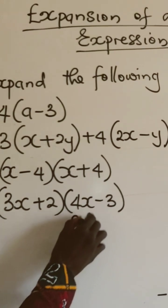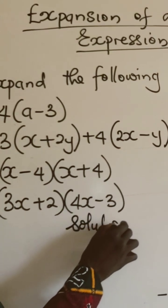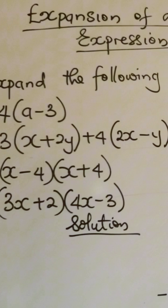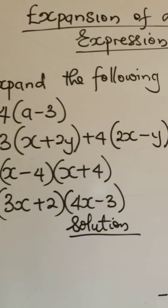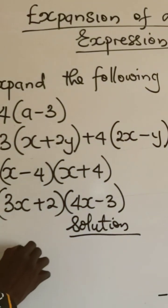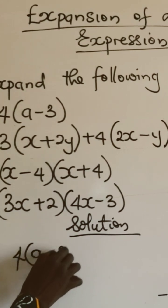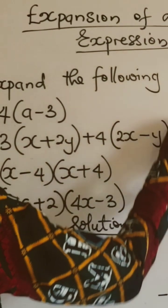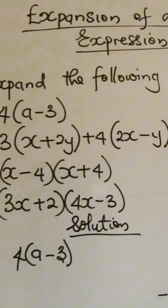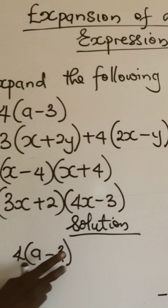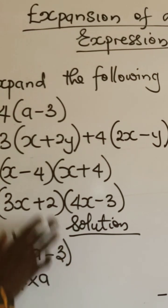Let's take number 1, which is 4 into (a-3). When you now say 4 into (a-3), it simply means you will use what is outside this bracket to multiply each of the terms. So here is 4 times a. I'm using it to do this one, but I will do this one straight.